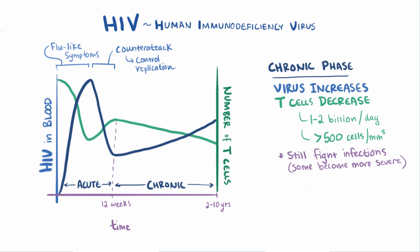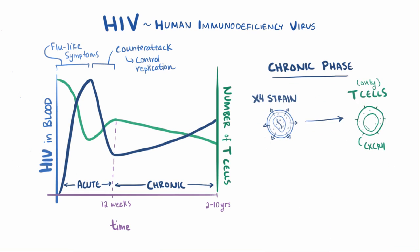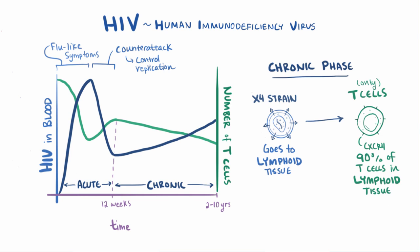Now remember how HIV can create mutations? During the chronic phase of HIV infection, it's worth pointing out that some patients develop an X4 strain of HIV, which targets the CXCR4 coreceptor, found essentially only on T cells. These X4 strains kind of lay low in the lymphoid tissues and steadily destroy CD4 T cells, since about 90% of T cells are found in the lymphoid tissue. Not all patients develop the X4 strain though, so it's not completely clear what the presence of this strain implies about the disease course.